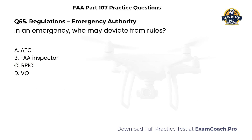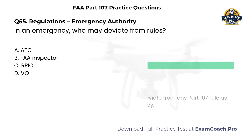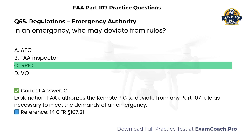Regulations — Emergency Authority. In an emergency, who may deviate from rules? A. Air traffic control. B. FAA inspector. C. Remote PIC. D. Visual observer. Correct answer: C. Remote PIC. The FAA authorizes the remote PIC to deviate from any Part 107 rule, as necessary, to meet the demands of an emergency.